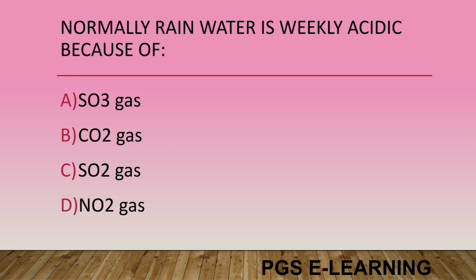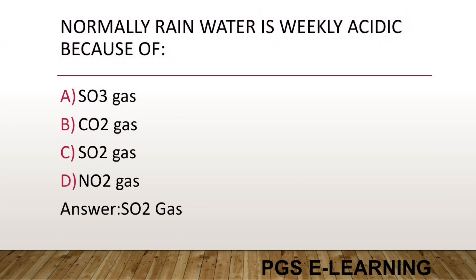Normally, rainwater is weakly acidic because of: Option A, SO3 gas. Option B, CO2. Option C, SO2 gas. Option D, NO2 gas. Correct answer is SO2 gas.